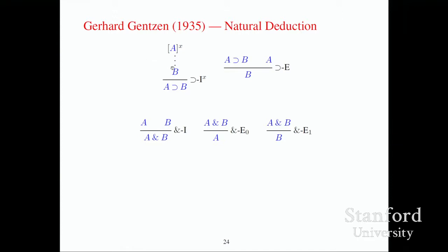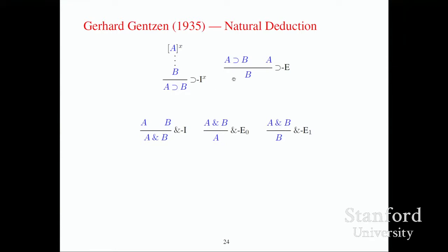What does it mean to say A implies B? It means if from the assumption A you can prove B. These little brackets around A say "I don't have a proof of A, I'm just assuming A is true." That assumption is discharged by the proof rule. Another proof rule says: if you have a proof that A implies B, and you have a proof of A, then you can conclude B. This is called an introduction rule — as you move down the proof, you introduce an implied symbol.